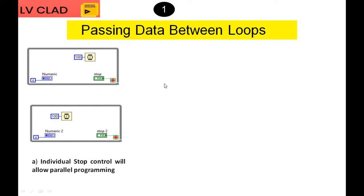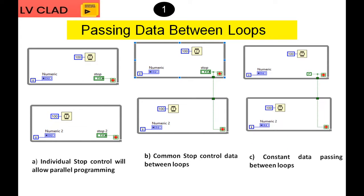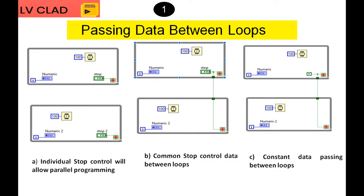As mentioned, the summary: first, individual stop control allows parallel programming. Second, with a common stop control between parallel loops, only the first loop runs; the second loop never iterates — when you press stop, it passes the value to the first loop, then the second loop iterates only one time. Third, when a constant boolean false is wired to the first loop, only the first loop runs; the second loop never runs. These are the cases asked in the CLAD exam.